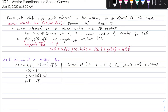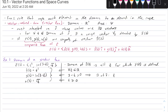We have three functions: T cubed exists for all T in the reals. The natural log of 3 minus T requires 3 minus T to be greater than zero. The square root of T can only exist when T is greater than or equal to zero. We are always limited by the weakest link — in this case the middle function — so the domain of R is the interval from zero inclusive to three.